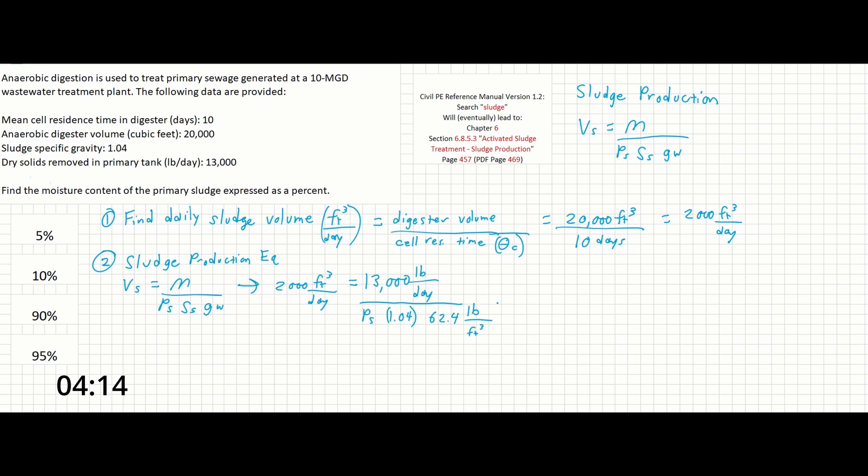That's a term that wasn't given, but it's one that you should know. Either have it memorized or look it up in the front of the manual during this problem. Obviously, it'll be faster if you have it memorized. From here, we can isolate P_S, and that's going to be 0.1, which is the percent of solids expressed as a decimal.